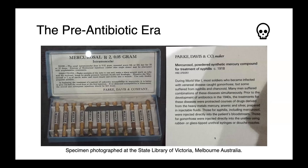Before we had modern antibiotics, we had to resort to some pretty grisly therapeutic options. This is a photo taken at the State Library of Victoria in Melbourne, Australia, of some mercury compounds that were used for treating venereal diseases. Those people who had gonorrhea would have this injected using a rubber catheter directly into the urethra, and if you had syphilis, this mercury was injected directly into the patient's bloodstream — certainly something that we want to avoid going back to as we see the emergence of antimicrobial resistance.